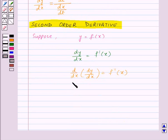And this is denoted by d square y by dx square, or d square of y, that is second order derivative of y, or y double dash, or y2.